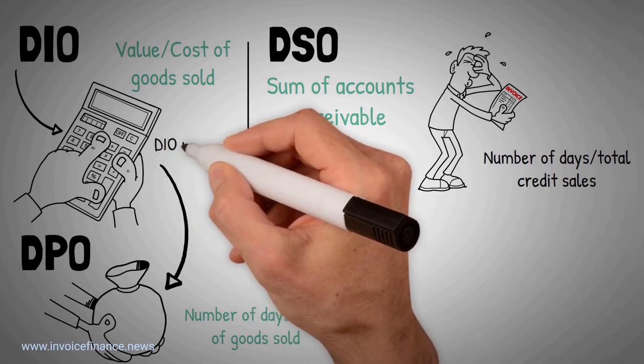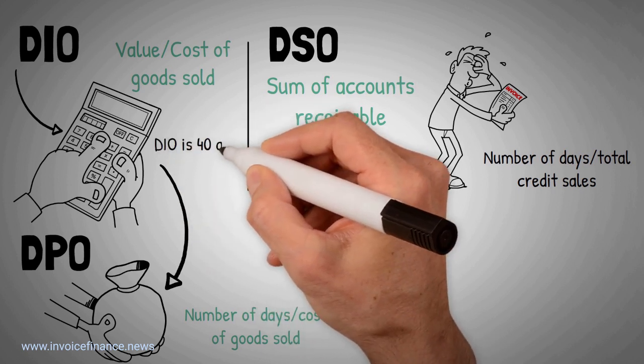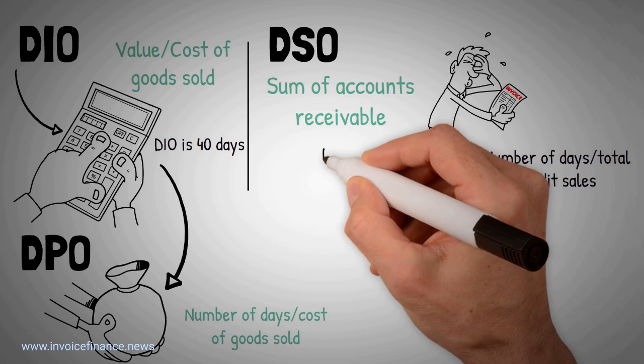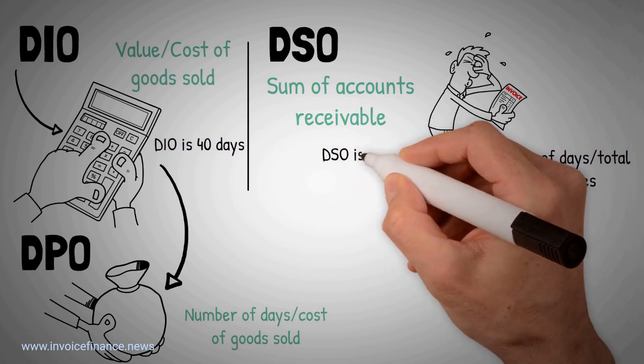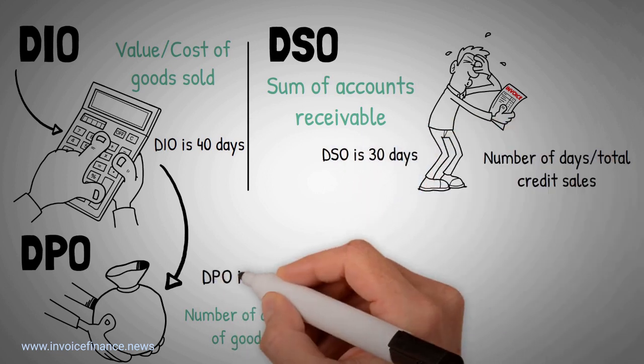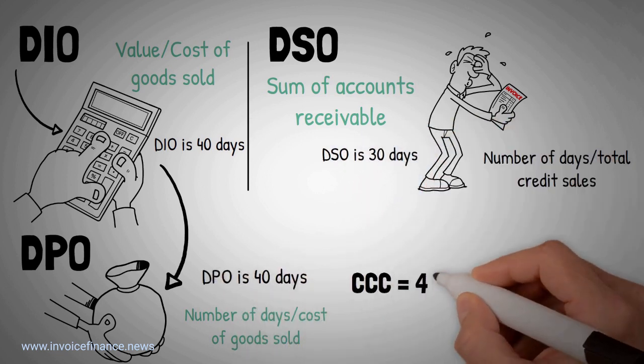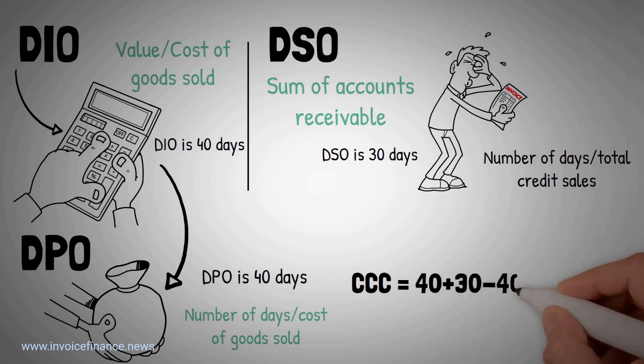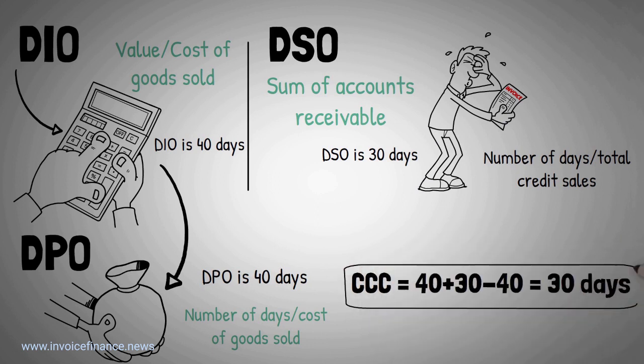So, if DIO is 40 days, DSO is 30 days, and DPO is 40 days, then CCC equals 40 plus 30 minus 40, which equals 30 days.